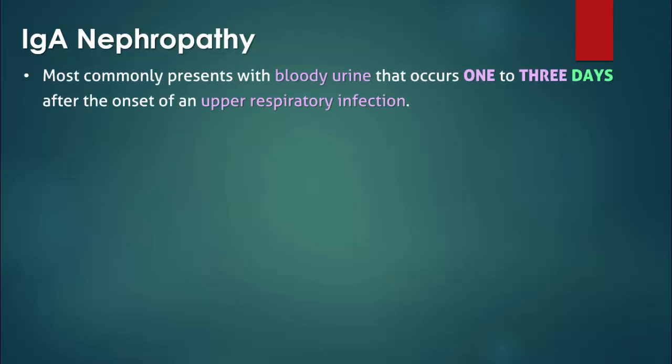Most patients with IgA nephropathy are asymptomatic and either present with visible hematuria or are found on routine screening to have microscopic hematuria and mild proteinuria. While most cases are associated with an upper respiratory tract infection, the inciting illness may also be gastroenteritis or a urinary tract infection.